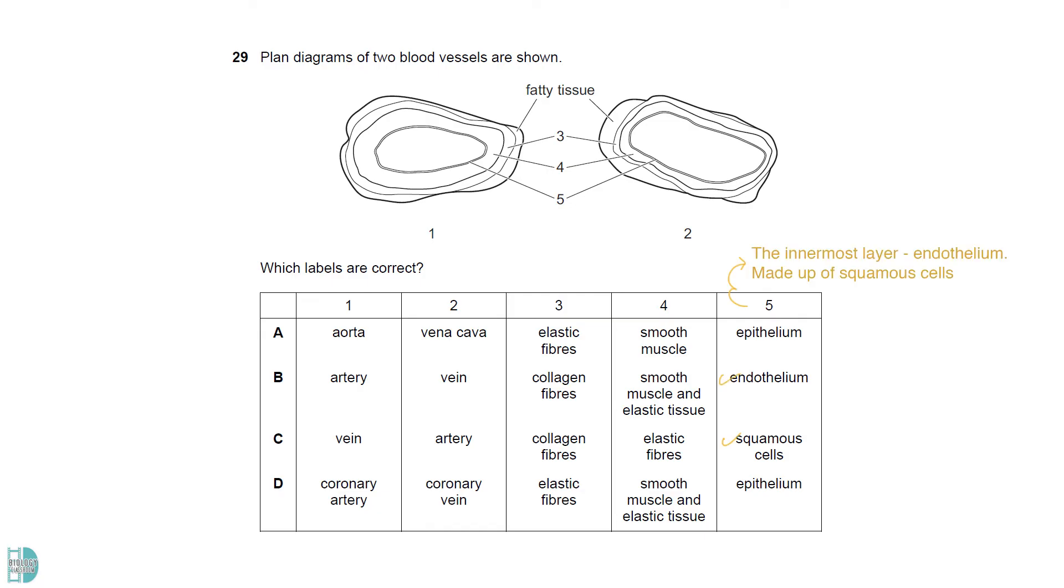The innermost layer is the endothelium. It is made out of squamous cells. So both B and C are correct for this. 4 is the second layer called tunica media. It is composed of smooth muscle cells and elastic fibers. 3 is the outermost layer, tunica adventitia or tunica externa. It contains a lot of collagen fibers. An artery has a thicker wall and smaller lumen to its diameter compared to a vein. So 1 is an artery and 2 is a vein.